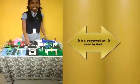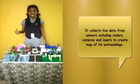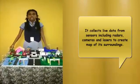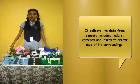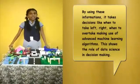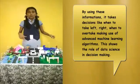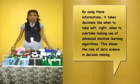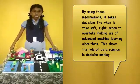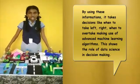This is a self-driving car. It is a programmed car. It moves by itself. It collects live data from sensors, including radars, cameras, and lasers to create a map of its surroundings. By using this information, it takes decisions like when to take left, right, when to overtake, making use of advanced machine learning algorithms. This shows the role of data science in decision-making.